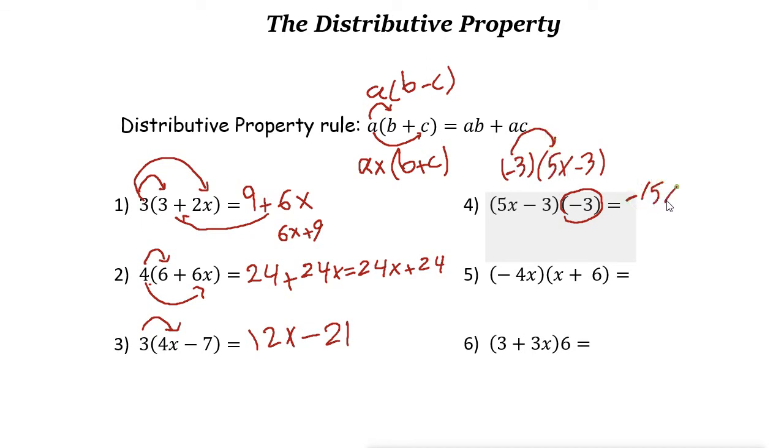-3 times -3 is +9. Next one: -4x times x is -4x². -4x times 6 is -24x. Next one: 6 is here, you can just write it 6.